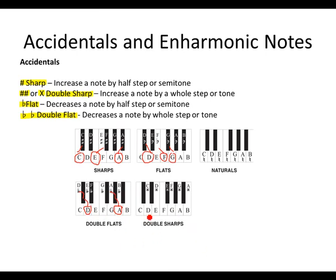Now with double sharps: take C — if we alter it by a whole tone, we move from C a half step, then another half step, and we get what we call C double sharp. The X symbol indicates our double sharp. The same applies to G: we move first semitone, second semitone, and we land on what we call G double sharp.